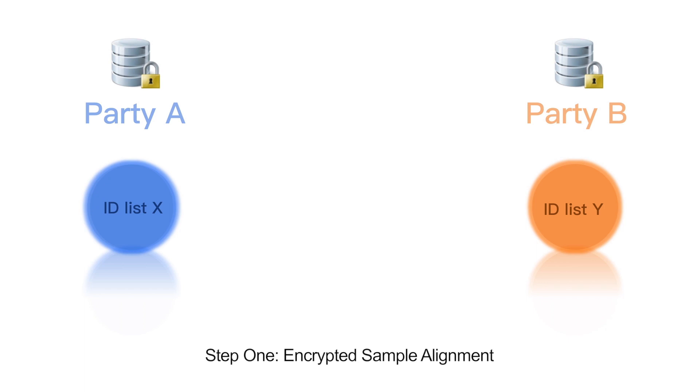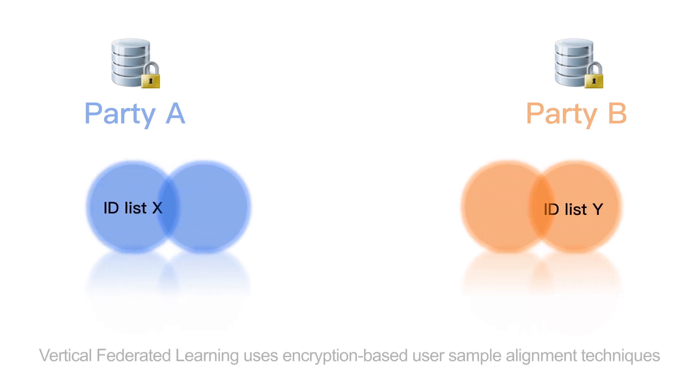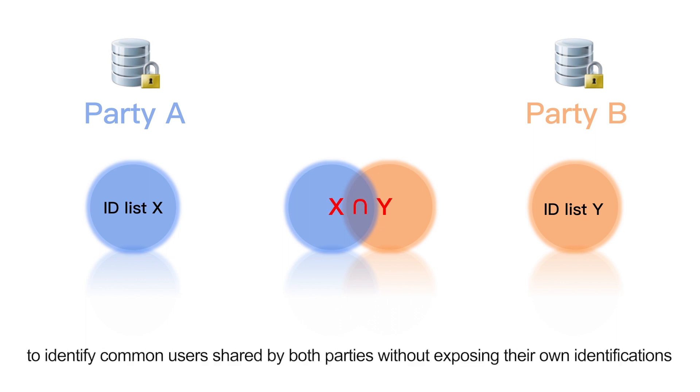Step 1: Encrypted sample alignment. Vertical Federated Learning uses encryption-based user sample alignment techniques to identify common users shared by both parties without exposing their own identifications, constructed by uniting the features of these common users.